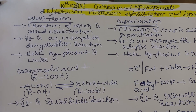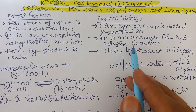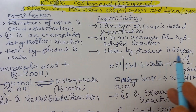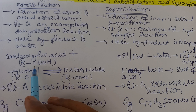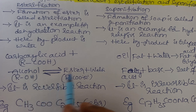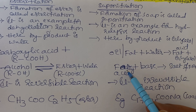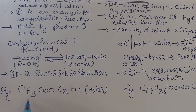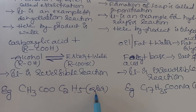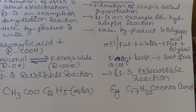To summarize the differences: formation of ester is esterification; formation of soap is saponification. Esterification is a dehydration reaction; saponification is a hydrolysis reaction. Byproduct of esterification is water; byproduct of saponification is glycerol. General equation: carboxylic acid (RCOOH) plus alcohol (ROH) gives ester plus water. For soap: oil or fat plus water gives fatty acid plus glycerol; fatty acid plus base gives salt of fatty acid. Esterification is reversible; saponification is irreversible. Example ester: ethyl methyl ester (CH3COOC2H5); example soap: C17H35COONa, sodium stearate.